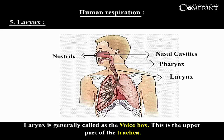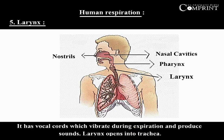Larynx: The larynx is generally called the voice box. It is the upper part of the trachea and has vocal cords which vibrate during expiration to produce sounds. The larynx opens into the trachea.